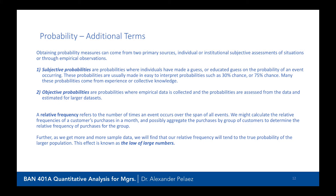Probability measures can come from two primary sources: individual or institutional subjective assessments, or through empirical observations. A subjective probability is one where individuals have made an educated guess based on experience or institutional knowledge — for example, knowing by experience that a probability is approximately 30% or 20%. These probabilities are usually expressed in easy-to-interpret round numbers such as 0.30 or 0.75. You'll rarely see a subjective probability like 36.5%. They come from experience and collective knowledge.